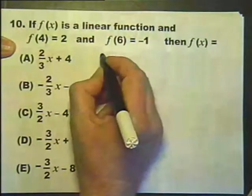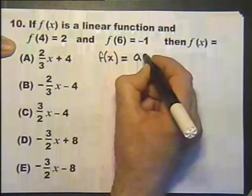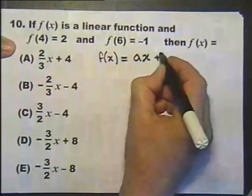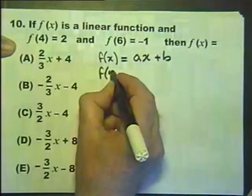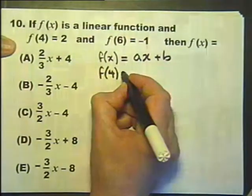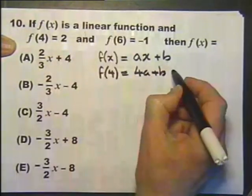Let's say we'll call the function some number a times x plus some number b. And we'll use the substitution of 4 in there, so you get 4a + b, and we know the answer is 2.